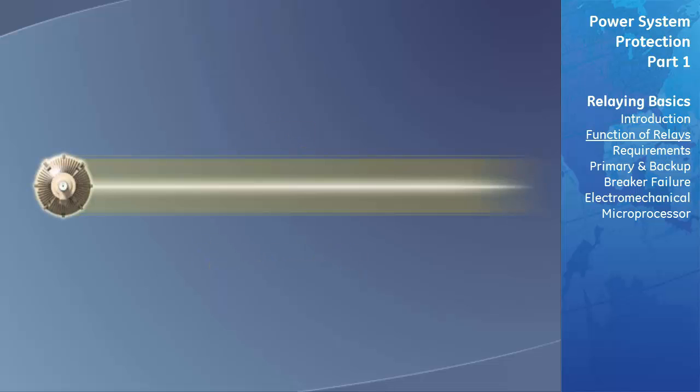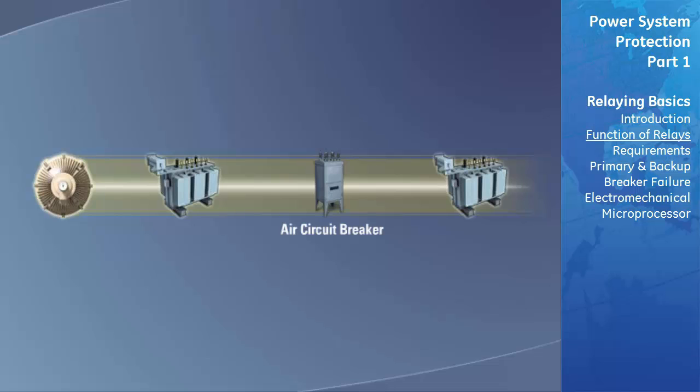Circuit breakers are located between each power system component, which makes it possible to isolate and disconnect the faulty component. If a breaker isn't installed between two adjacent components, both components will need to be disconnected for a failure in either one.